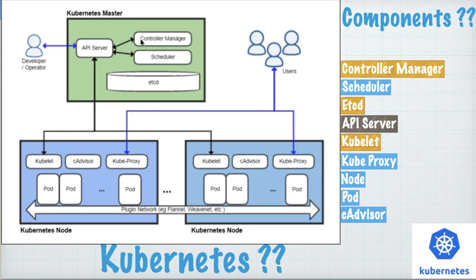This is our Kubernetes master node, also known as the controller manager. First, we have the API server, which interacts between your Kubernetes nodes and the Kubernetes master. The developer hits this API server, which sends requests to the controller manager and scheduler, which in turn sends instructions to the nodes — for creating pods or containers, monitoring them, and exposing them to the outside world.